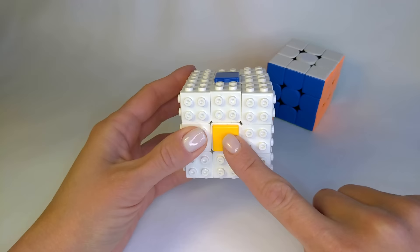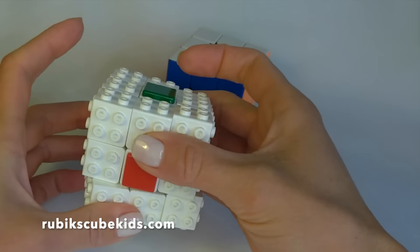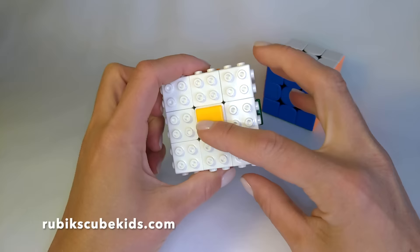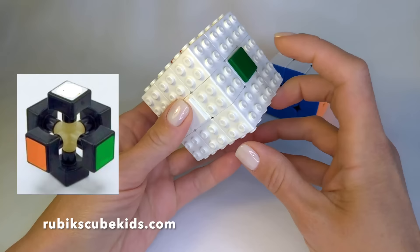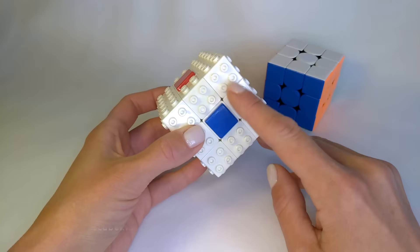The first type of piece is called the centerpiece. The center has only one color. There are 6 centers in total and the centers don't move relative to each other. For example, no matter how much I mix up the cube, the yellow side will always be opposite of the white side. The green opposite blue and red opposite orange.